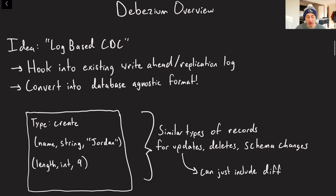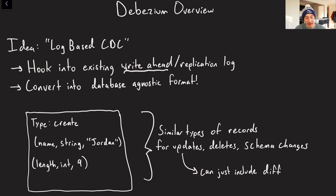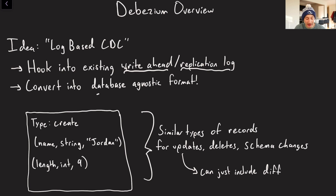So what does Debezium do? How does its architecture work? It uses log-based change data capture. The main idea is that basically every single database, for fault tolerance or replication, maintains some sort of log of writes — there's always going to be some sort of write-ahead log, assuming it's an on-disk database, or a replication log. Depending on which one it is, there have to be different implementations of Debezium for every single source database. You hook into that log and stream those changes out to other systems, converting them into a database-agnostic format.